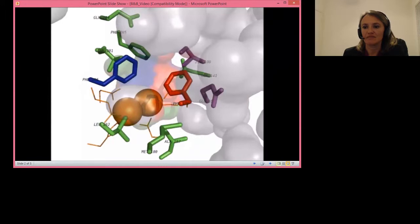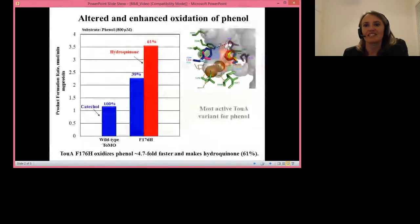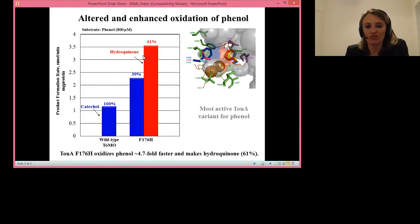Specifically, we identified variant histidine-176 that had 4.7-fold faster hydroxylation activity towards phenol compared to the native enzyme. This variant also produced 61% of the novel product hydroquinone from phenol.